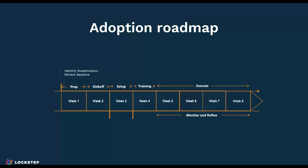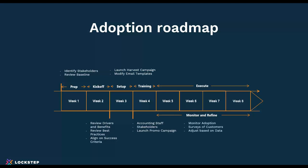In the beginning, one of the things you do is identify your stakeholders and figure out what the business drivers are that will make this happen. You launch a campaign to collect email addresses you might be missing — those paper invoices probably are missing AP email addresses, so how do you collect those? Then you get your staff ready, and then launch a promotional campaign. After that, you monitor adoption, get feedback from customers — what do they like, what do they not like — and adjust based on the data you get back.